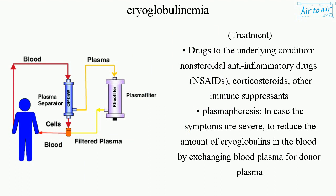If precipitates are present, the underlying condition is treated. Treatment options include non-steroidal anti-inflammatory drugs (NSAIDs), corticosteroids, other immune suppressants, and plasmapheresis in cases where symptoms are severe, to reduce the amount of cryoglobulins in the blood by exchanging blood plasma for donor plasma.